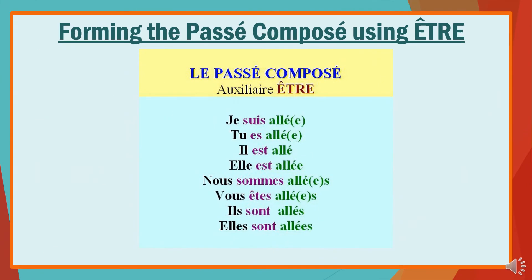Here, être has been used to conjugate the verb aller in the passé composé. You know that aller falls into the DR MRS VANDERTRAMP category, so it must be conjugated with être: je suis allé(e), tu es allé(e), elle est allée, nous sommes allés, vous êtes allés, ils sont allés. For je and tu, there is an extra -e in brackets — that is if the person speaking is feminine.